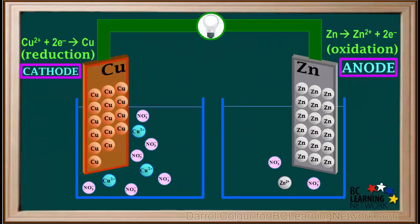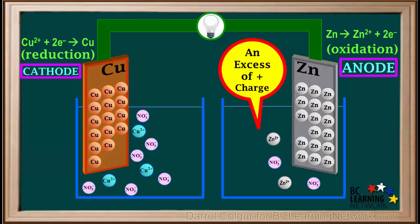In order to understand what the function of the salt bridge is, we'll see what would happen if we didn't have the salt bridge. As positive ions or cations are formed at the anode and enter the solution, an excess of positive charge would build up in the zinc nitrate solution. Notice we have a total of four positive charges and two negative charges on the ions depicted in this solution.